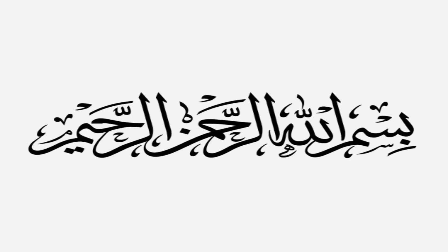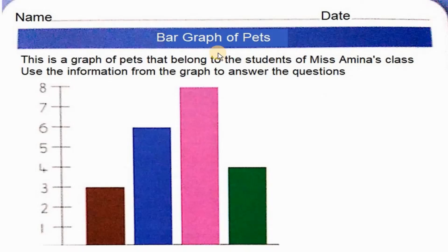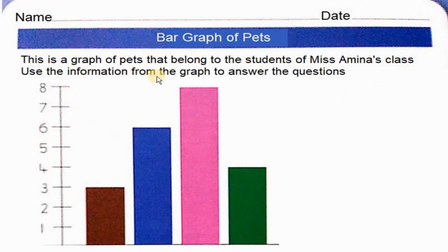Bismillah ar-Rahman ar-Rahim. The Smart School, Grade 2, The Smart Resource Pack. Mathematics: Bar Graphs of Pets. This is a graph of pets that belong to the students of Ms. Amna's class. Use the information from the graph to answer the questions.